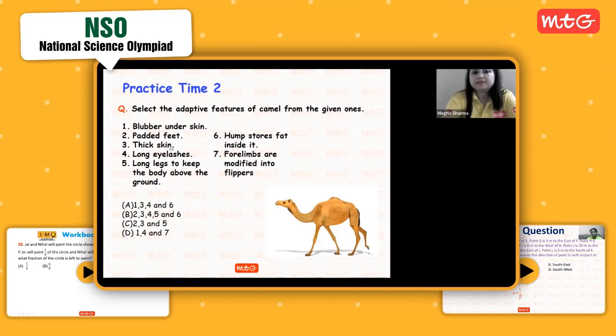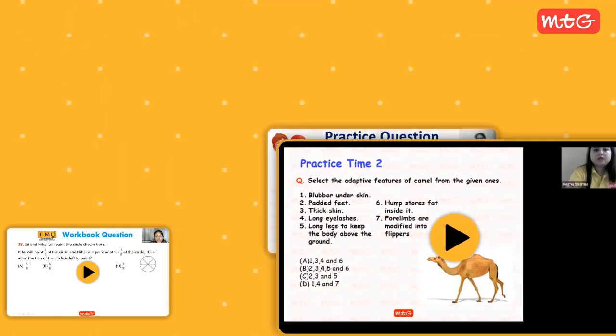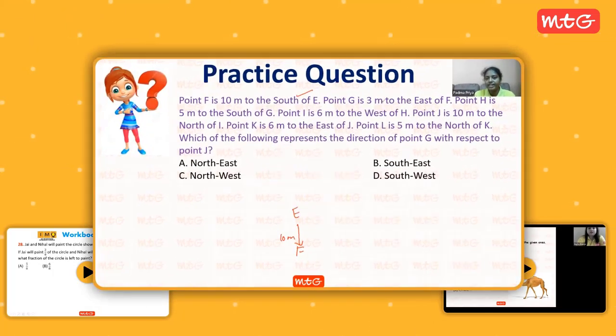Thick skin, yes, to protect from heat of the sun. Long eyelashes, yes. Long legs to keep the body above the ground, yes. Fat inside it, yes. Four limbs modified into flippers—no, it is for penguins. So 2, 3, 4, 5, and 6 is the option given in B. Point G is three meters to the east of F.